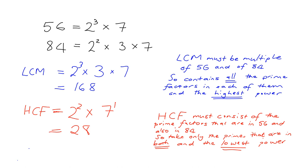Let's quickly recap. To find the highest common factor and lowest common multiple using prime factorization: first, get your prime factorizations. For the lowest common multiple, take all the primes you can see and take the highest power of each — it's almost opposite to what you'd expect: looking for the lowest common multiple, you actually take as much as you can. For the highest common factor, you take only the primes that appear in both numbers, and you take the lowest power of each.